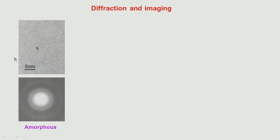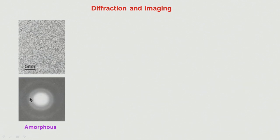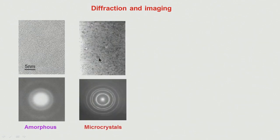An amorphous sample gives rise to a diffuse ring pattern in diffraction. By analysing this we can get information about the radial distribution of atoms.